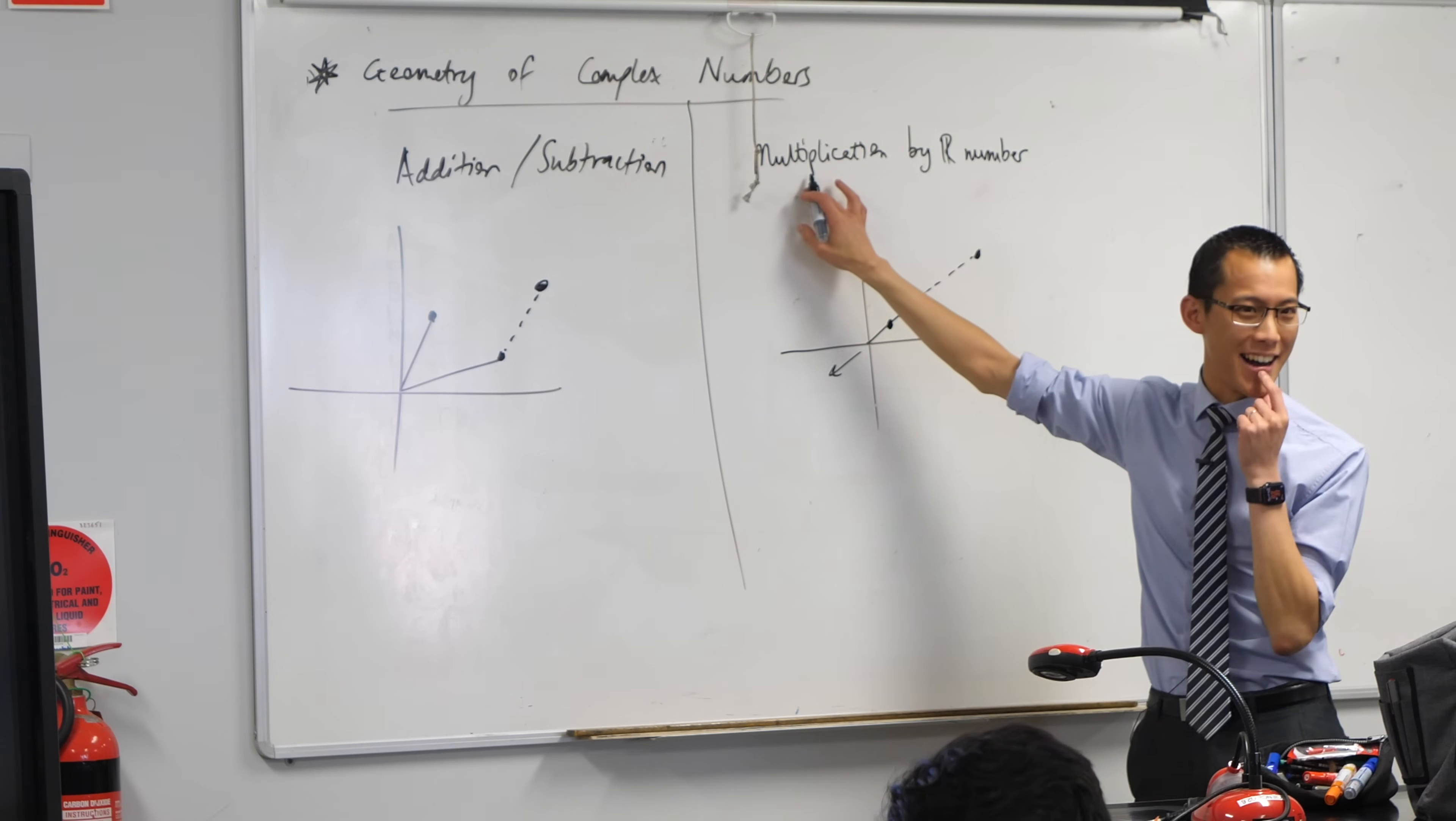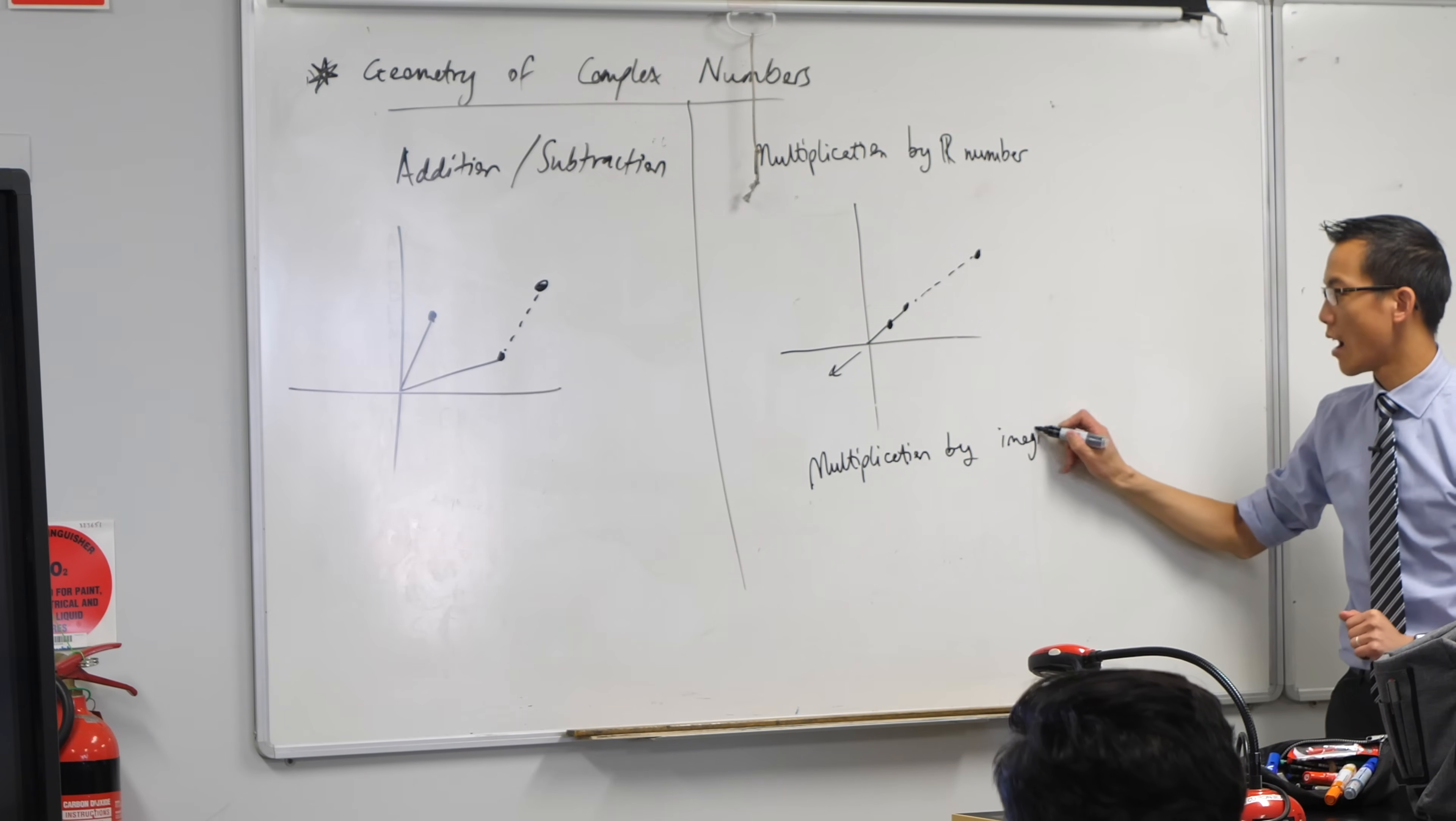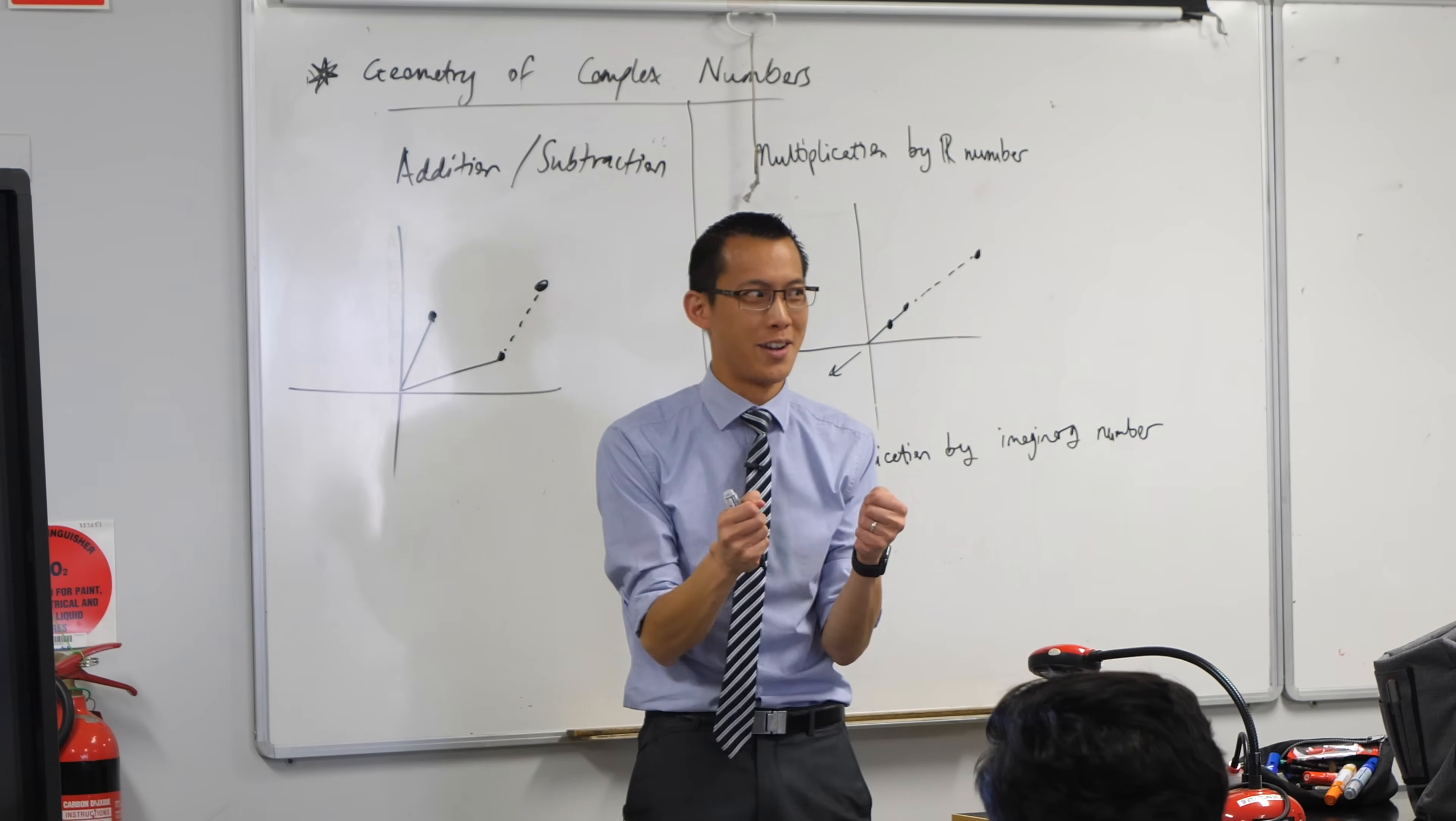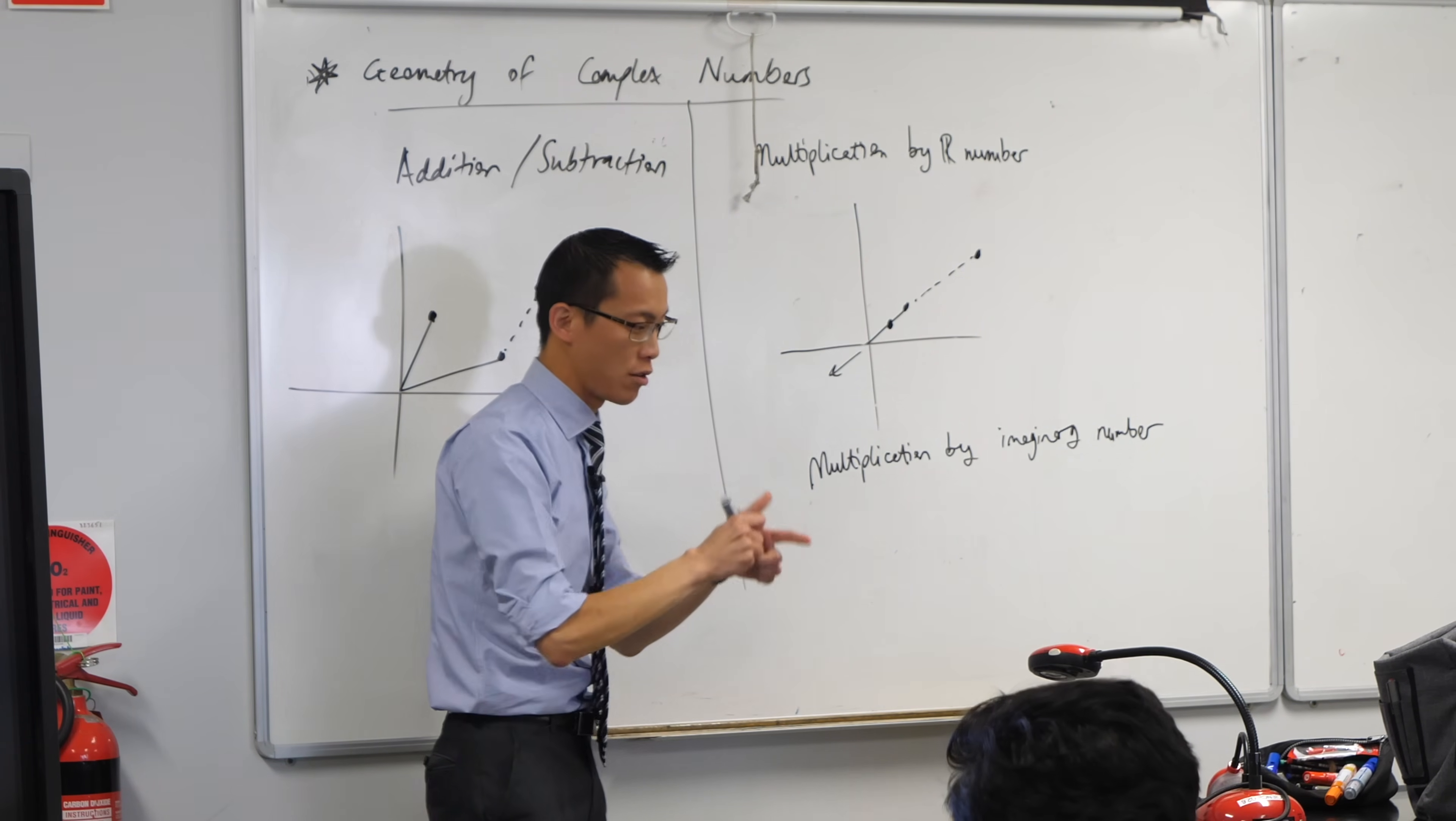You already know because we covered it at the end of last lesson. What happens if we multiply not by a real number, but by an imaginary number? Like, say, i. What effect did that have on the successes of z1, z2, z3? What did we use? What geometric word can you use to describe what's going on? It's anti-clockwise rotation around the origin. Do you remember that? Let me say that again. In fact, it's so important, I'll write it.